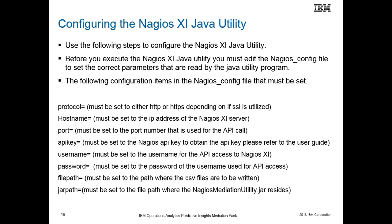The protocol parameter can be set to either HTTP or HTTPS depending on whether SSL is used to communicate with the Nagios XI software. The host name is the IP address of the Nagios XI server. The port parameter is the port number that will be used for the API calls to the Nagios XI software. The API key parameter is used if you do not want to use the user name and password to authenticate with the Nagios XI server; refer to the Nagios XI documentation on how to retrieve the API key. The user name and password parameters are used to authenticate with the Nagios XI server. The file path parameter is the path that the CSV files will be written to on the Predictive Insights server. Finally, the jar path parameter specifies the location where the Nagios Java utility resides.